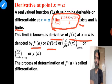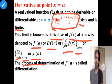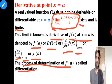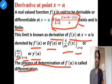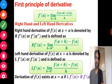Different notations for this are: f'(a), df(a), d/dx of f(x) at x equal to a, or dy/dx at x equal to a, or y'(a). These are the different notations we have learned in 11th standard. The process of determination of f'(a) is called differentiation — the process of finding the derivative of a function is known as differentiation. This is the first principle derivative from 11th standard.